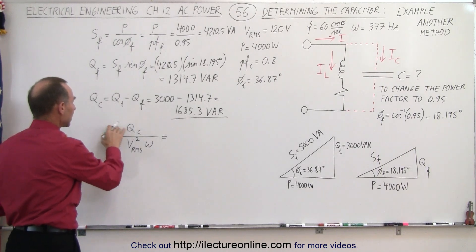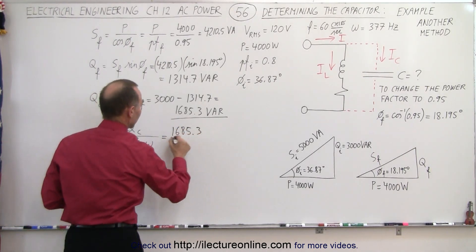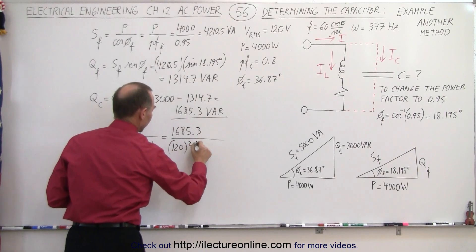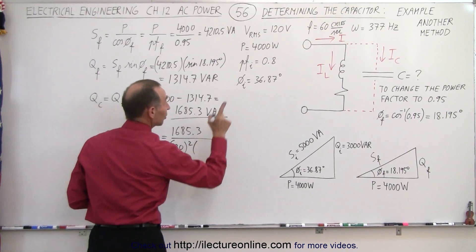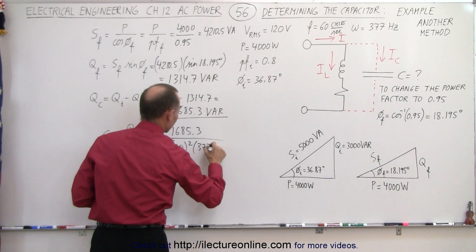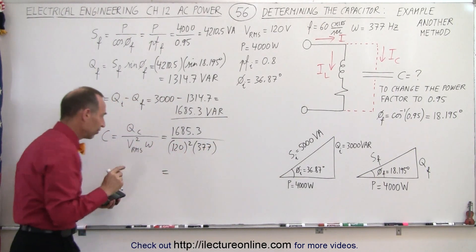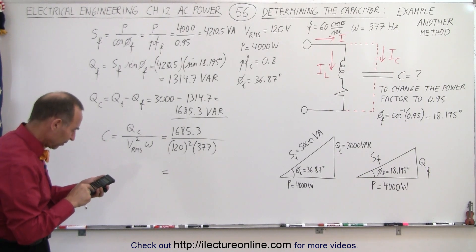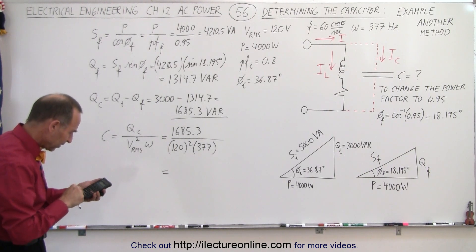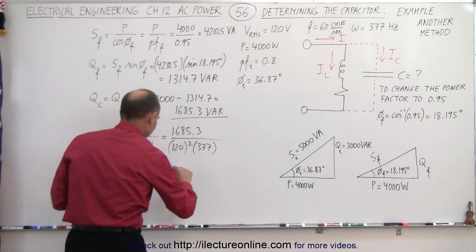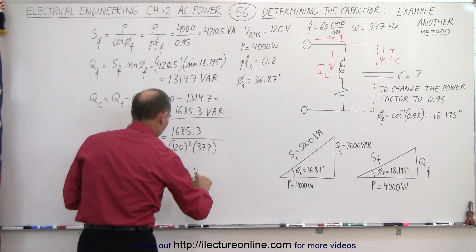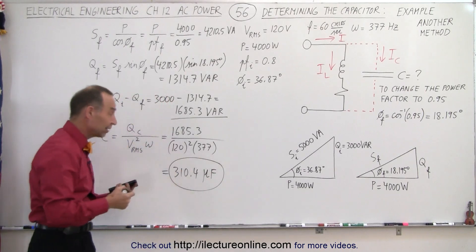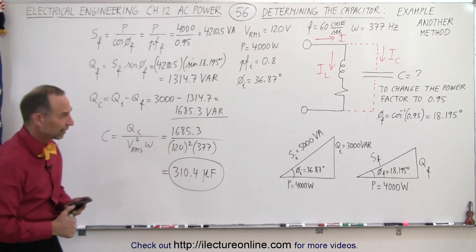Now we plug that in here and divide it by VRMS squared times the angular frequency of the circuit, which is 377. And that gives us the new capacitor value. So divide by 120 squared and divide by 377 and we get 310.4 microfarads, which is the exact same value that we got in the previous video using the different method.